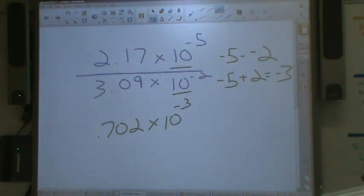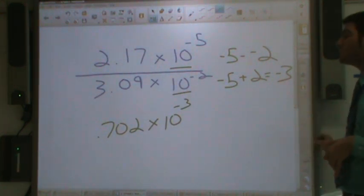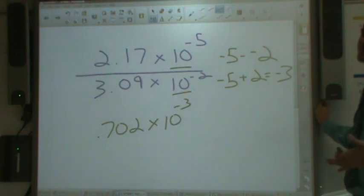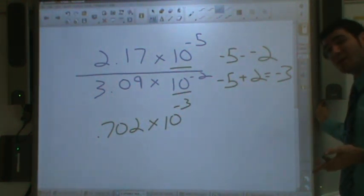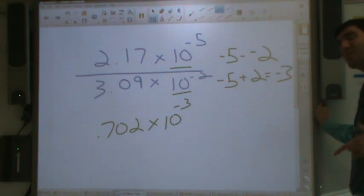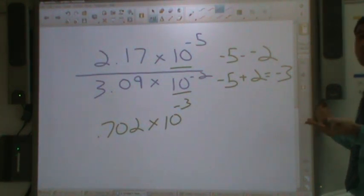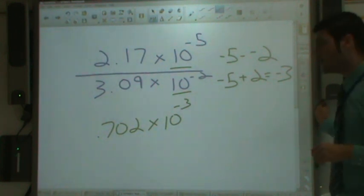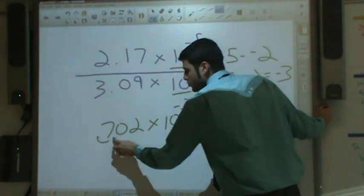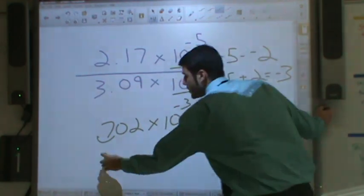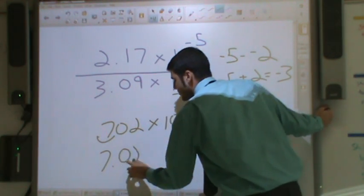So our exponent is now negative three. Times ten to the negative three. So far we are just about done. That is step two. However, step three says we check and look at that coefficient. If that coefficient is less than one, then we have to move it over. And unfortunately in this problem, 0.702 is less than one. So we have to move that decimal place over one to make sure it's a number between one and ten.